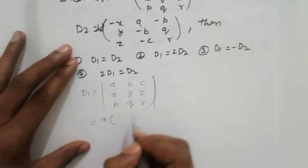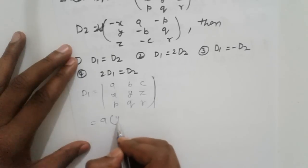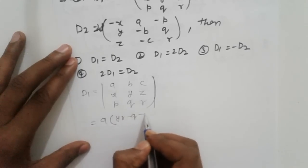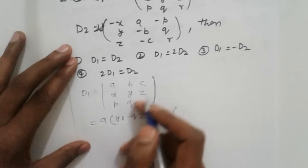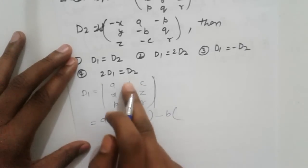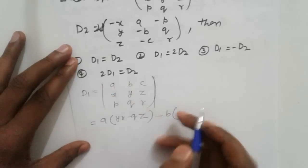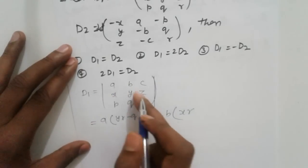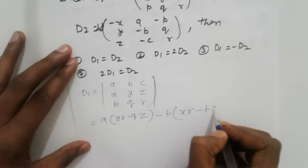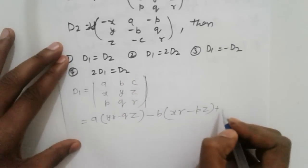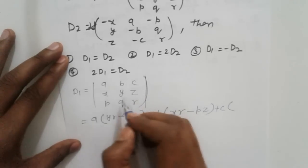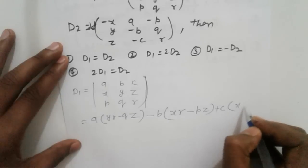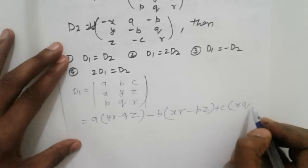Expanding along the first row: A times (YR - QZ) minus B times (XR - PZ) plus C times (XQ - PY). That is the value of D1.